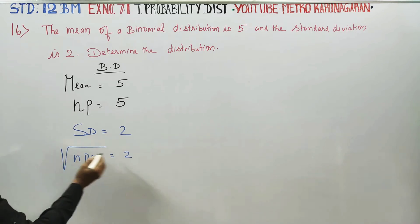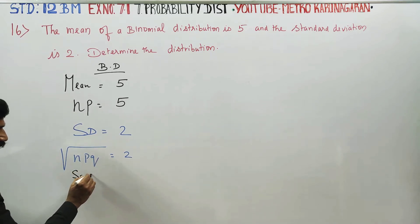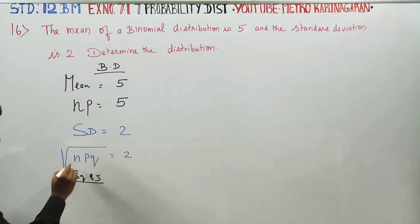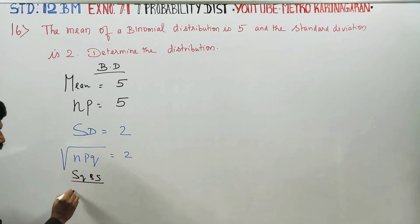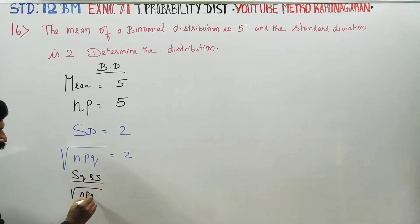Squaring both sides, we get square root of npq whole squared, which gives npq equals 4.